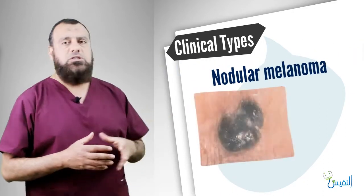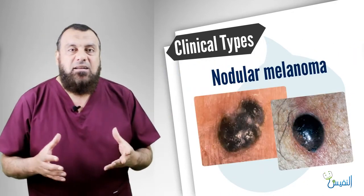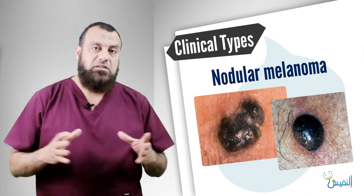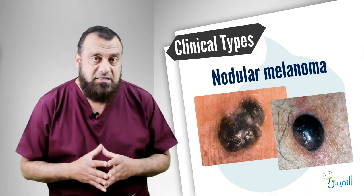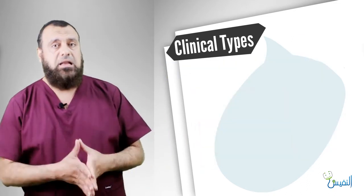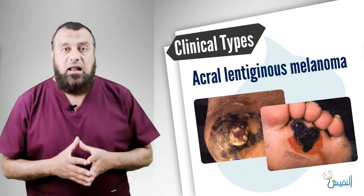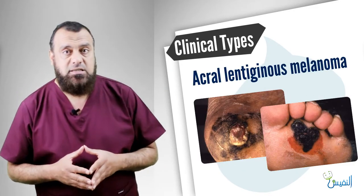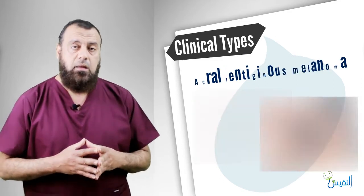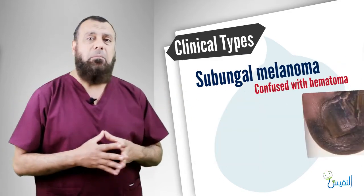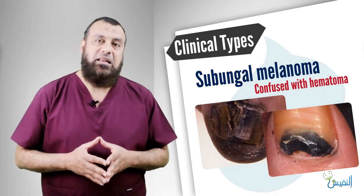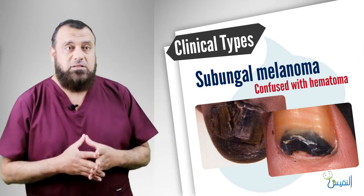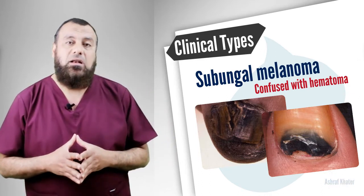The third type is nodular melanoma. The nodule can ulcerate into a typical melanoma ulcer. The fourth is acral melanoma, which occurs in the digits. The fifth is subungual melanoma, which may be mistaken for a subungual hematoma.